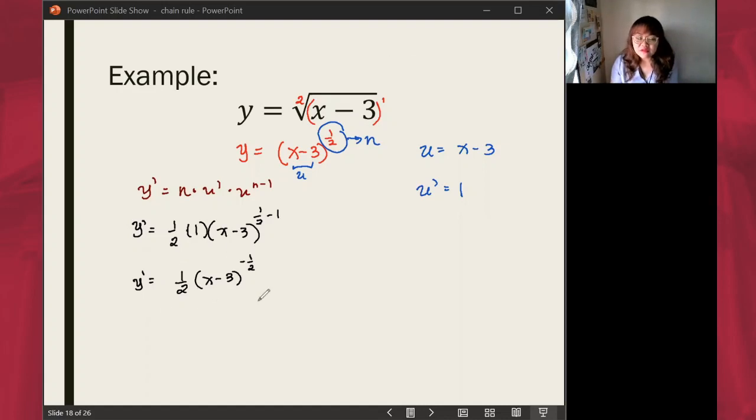Next, we could simplify this further. Although this could be considered one of the correct answers already, this could still be simplified further. It could be written as 1 over 2 times x minus 3 raised to one-half.